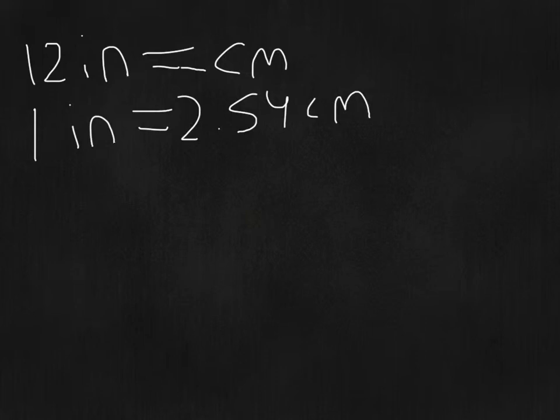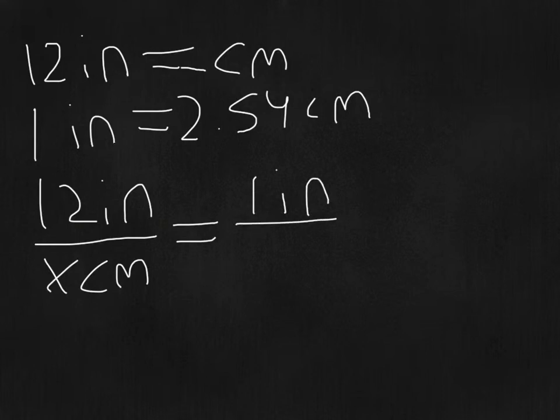So the first thing you need to do, which the problem asks you to do, is write an equation. The equation for this problem would be a proportion with 12 inches over x centimeters being equal to 1 inch over 2.54 centimeters.